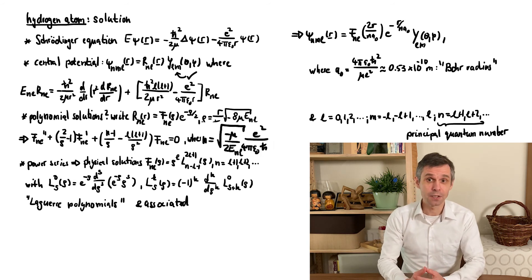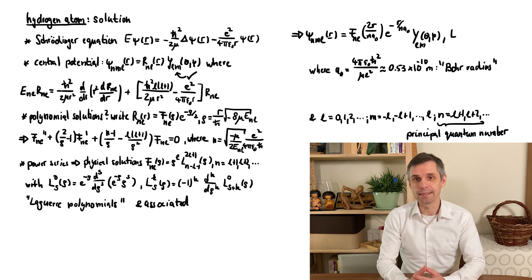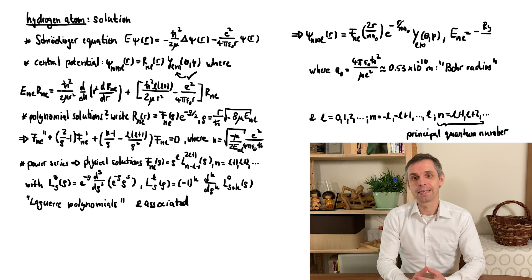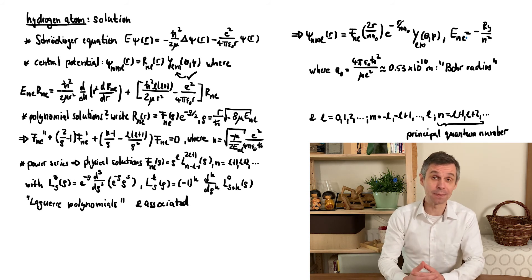By inverting the definition of n, we obtain the energy, which actually only depends on this quantum number, explaining its name as the principal quantum number.